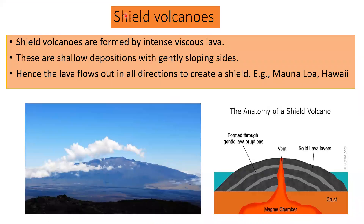Shield volcanoes are formed by low-viscosity lava. These are shallow depositions with gently sloping sides, and the lava flows out in all directions to create a shield-like structure. An example is Mauna Loa of Hawaii.